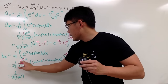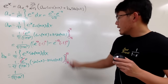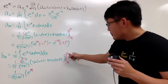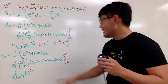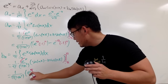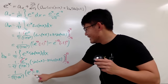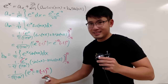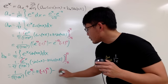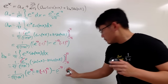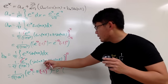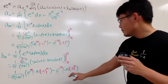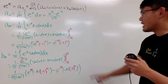Pulling 1 over [π(1 + n²)] to the front: plugging in π gives e to the π. Sine(nπ) = 0, so that's gone; −n·cos(nπ) gives −n·(−1)^n. Subtracting the −π evaluation: e to the negative π, sine(−nπ) = 0, and −n·cos(−nπ) again gives −n·(−1)^n. That gives us our final bₙ.